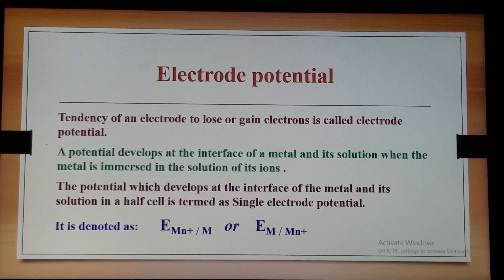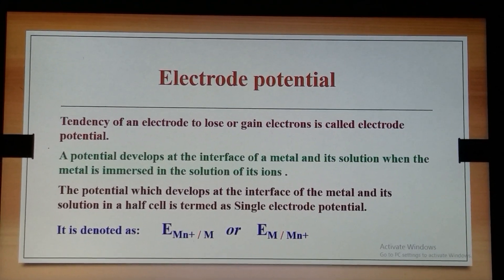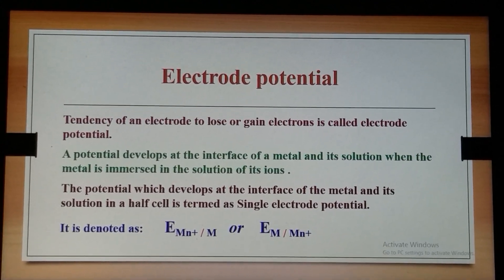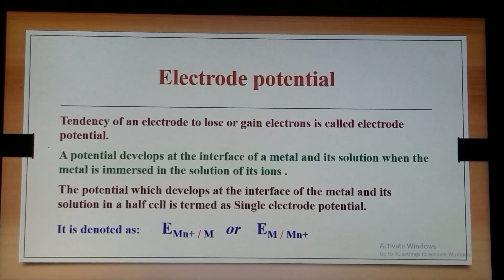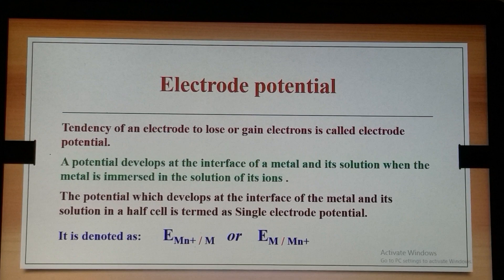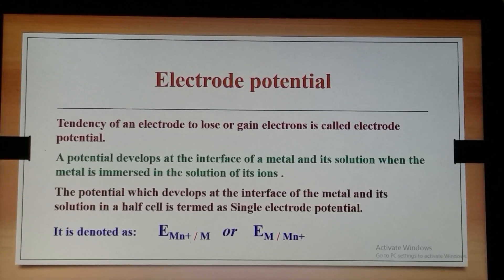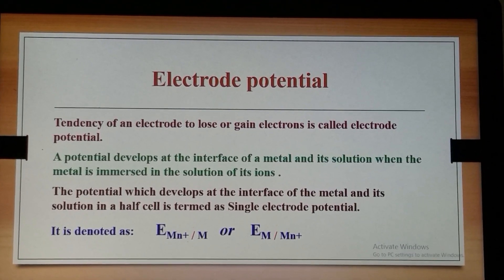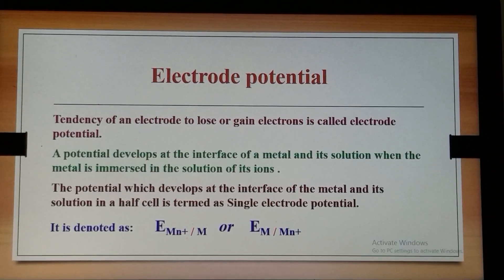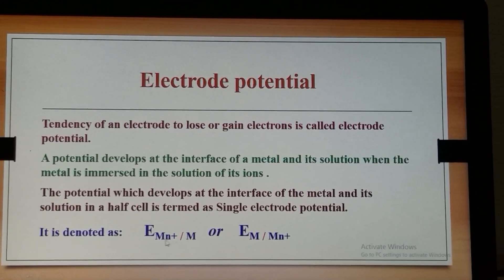If the electrode loses the electrons it is called oxidation potential, and if it gains the electrons it is termed as the reduction potential, and it is denoted as written here.